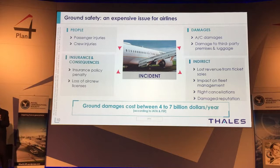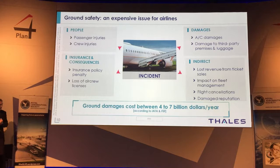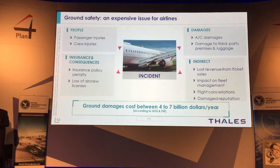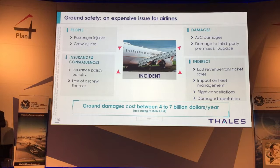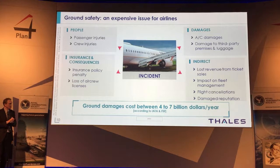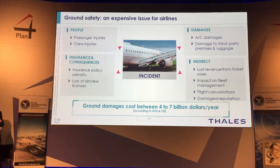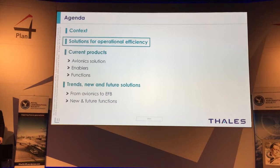All of that is quite an expensive issue for airlines. There are ground damages that cost between 4 to 7 billion dollars a year, either because of injuries from passengers or crew, damages to aircraft — especially in case of runway excursion — or damage to third parties with impact on insurance fees. There are also indirect costs, especially impact on fleet management or flight cancellations when you have a problem with your aircraft. That's the global context of taxiing on airport in 2017.